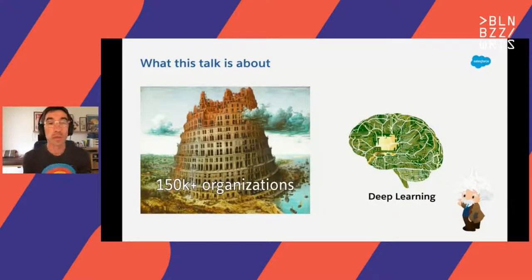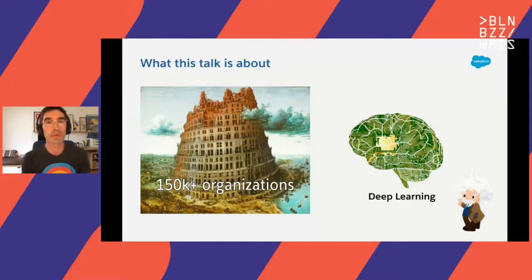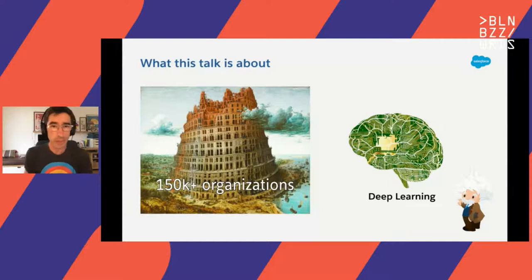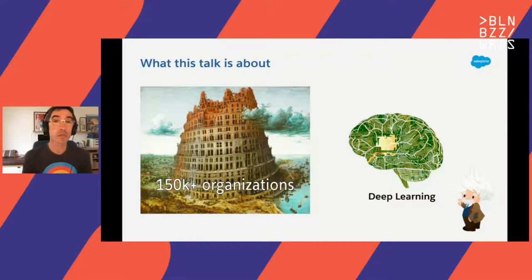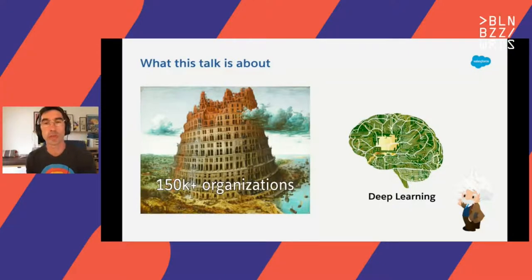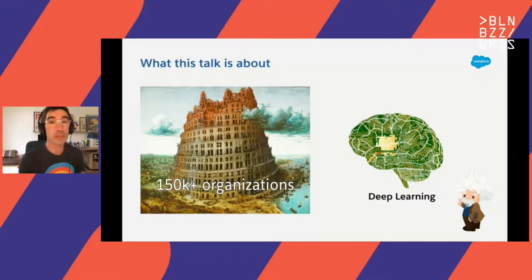So what we will talk about today: natural language search at Salesforce. The context of Salesforce is very specific because our products have a huge number of customers — more than 150,000 organizations use Salesforce. This is why I chose the bubble tower image. Each of these organizations, each of these customers, have their own data, their own way to describe their data, and their own meaning for generic terms. To address the problem, we built our system with a deep learning model at its core, which comes with its own challenges because of our very strict legal and technical constraints — basically, we cannot train on customer data.